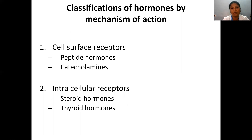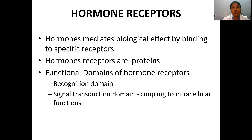Classifying hormones by mechanism of action: the mechanism is dependent upon the type and location of the receptor. Receptors on the cell surface bring about the action of peptide hormones and catecholamines, whereas intracellular receptors bind steroid hormones and thyroid hormones. Hormone receptors mediate biological effects by binding to specific receptors. Most hormone receptors are proteins. The functional domains include a recognition domain, to which the hormone binds, and a signal transduction domain, coupled to intracellular downstream functions.